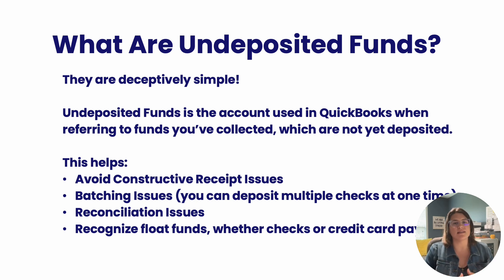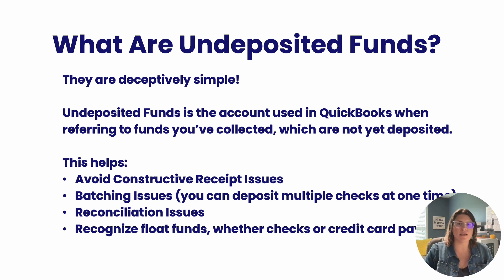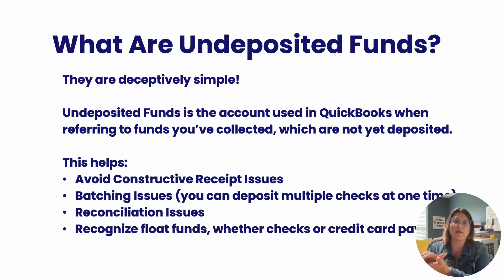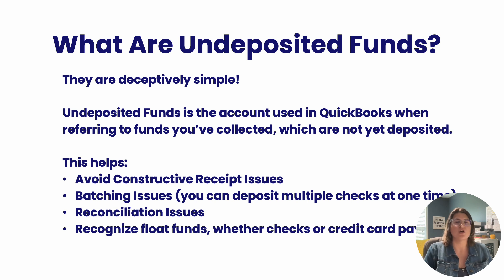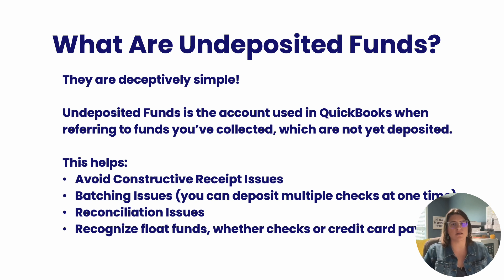It also alleviates batching issues. When you're receiving five different checks, you don't want to see five different entries on your bank account ledger. You want to put everything into your undeposited funds account and then make that deposit at one time, transferring those funds from undeposited funds into one line item on your bank account ledger. This also fixes any reconciliation issues you may have around manual checks — they're already batched for you, so they'll match your bank statement and make reconciliation easy.